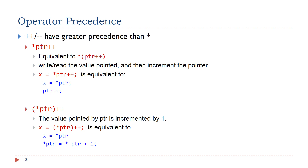The increment operator ++ and the decrement operator -- have greater precedence than the dereference operator *. Therefore, the following two expressions are different. In the first expression, read or write the value pointed by the pointer, then increment the pointer, pointing to the next element in an array — for example, *ptr++ is equivalent to two separate statements. In the second expression, *++ptr, the value pointed by the pointer ptr is incremented by 1, and the content of the pointer does not change.